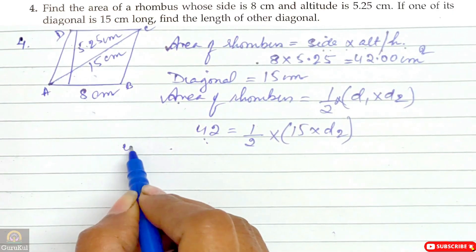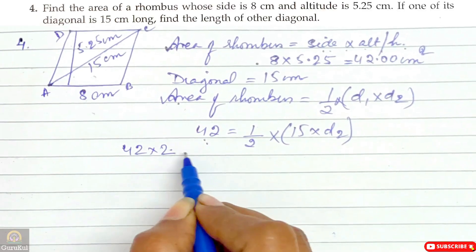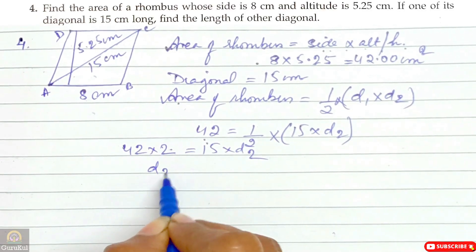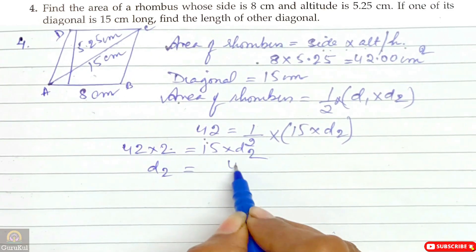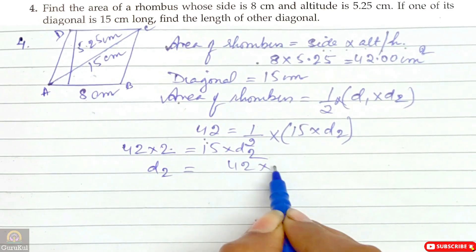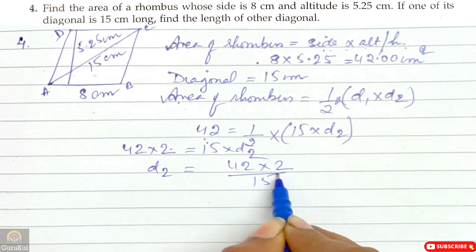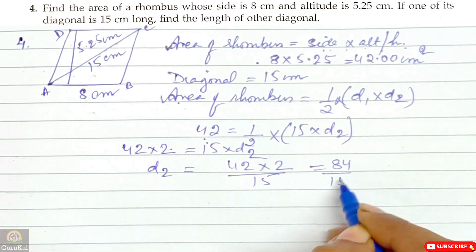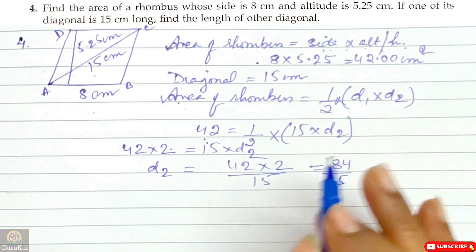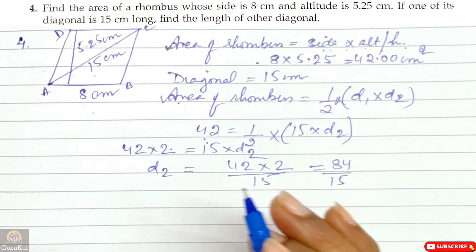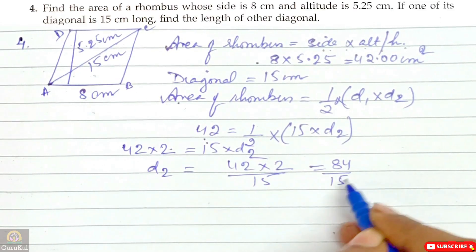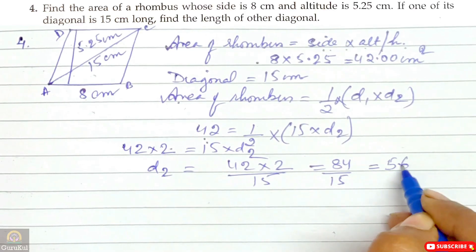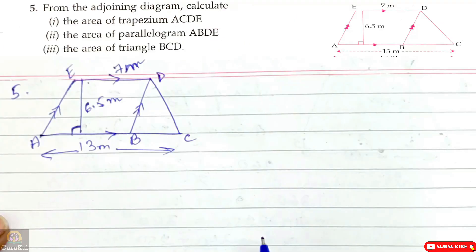Now applying the second formula: 42 equals half into 15 into D2, so 42 into 2 equals 15 into D2, giving D2 equals 84 divided by 15. After division, the answer is 5.6 cm.